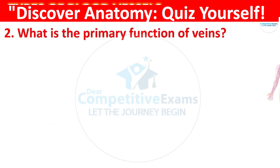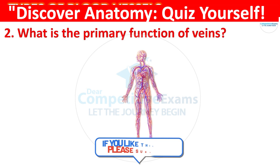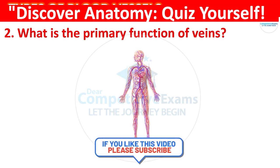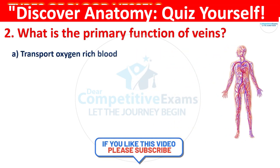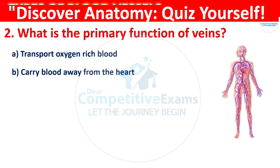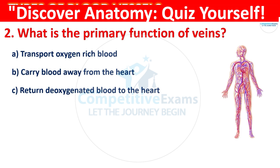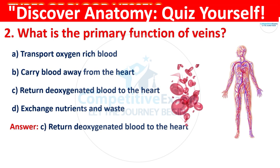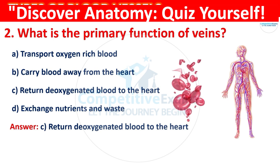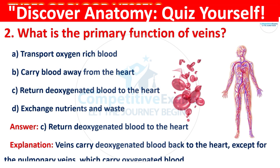Question 2: What is the primary function of veins? Your options are: transport oxygen-rich blood, carry blood away from the heart, return deoxygenated blood to the heart, or to exchange nutrients and waste. The correct answer is C, that is to return deoxygenated blood to the heart. Veins carry deoxygenated blood back to the heart, except for the pulmonary veins which carry oxygenated blood.